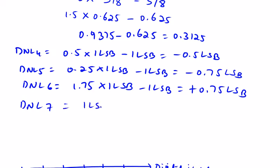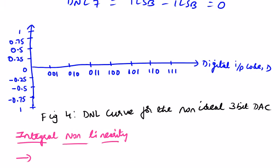DNL(7): actual minus ideal are both the same, so it is 0. Based on the above values, we can plot DNL in LSBs versus the input digital code. Since DNL(5) and DNL(6) are more than half LSB, the DAC is not 3-bit accurate.